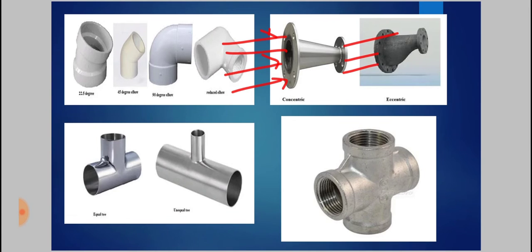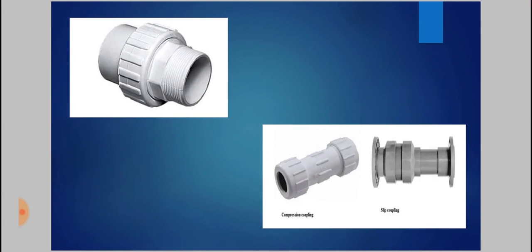The next fitting is the cross type. Cross-type pipe fittings contain four openings in four directions and are used when four pipes meet at a point, generally provided at a junction. These fittings generate more stress on the pipe as temperature changes because they are located at the center of four connection points. Cross fittings are generally used for fire sprinkler systems.